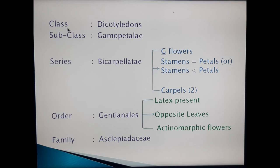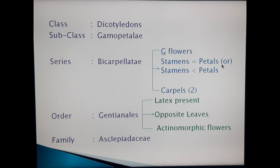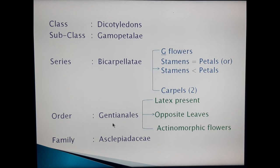The first series, Bicarpellate — the main reason is due to the presence of two carpels. Along with this reason, two other reasons also apply: hypogynous flowers, and stamens number equal to or less than the petals number. Due to these three reasons, Asclepiadaceae family is kept in the Bicarpellate series.